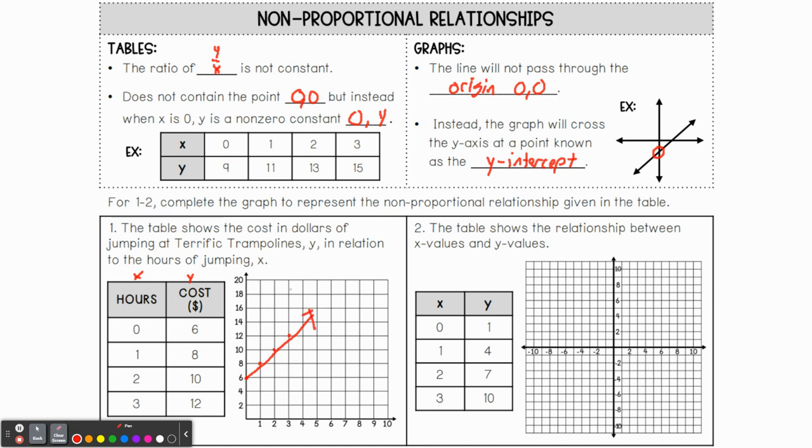So let's take a look at the next one here. So here we have X is zero when Y is one. When X is one, Y is four. When X is two, Y is seven. When X is three, Y is 10. So I'm going to start up at the top here so we can see. I can draw this line all the way through.